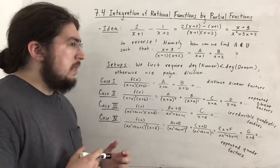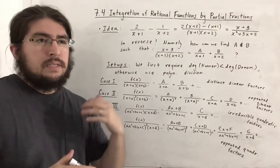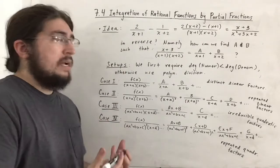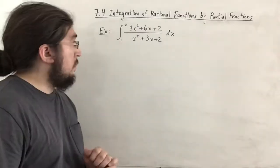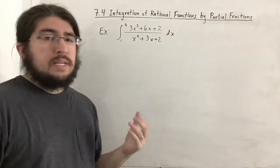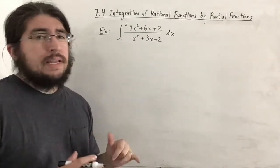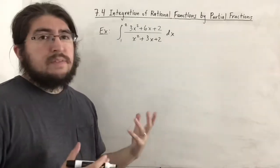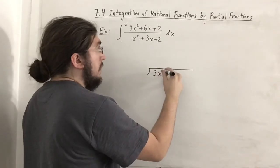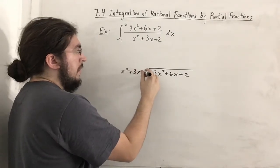Now we'll see examples of setting this up and solving for the coefficients, and why this is important for integration. We start with a definite integral. The denominator factors, but notice the degree of the numerator equals the degree of the denominator — we don't want that. When the degree of the top is greater than or equal to the degree of the bottom, we must use polynomial long division first.